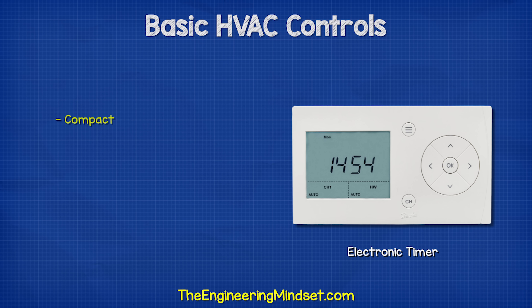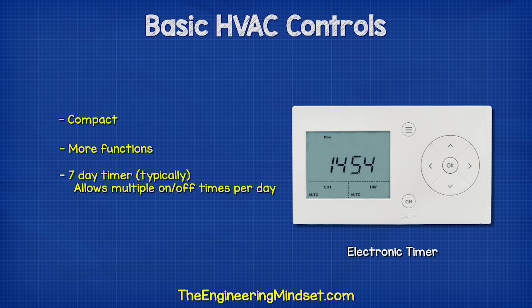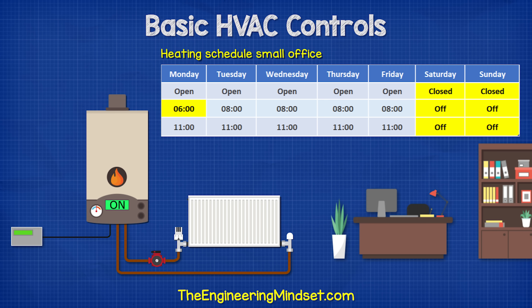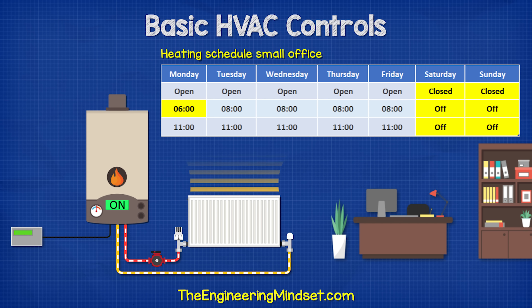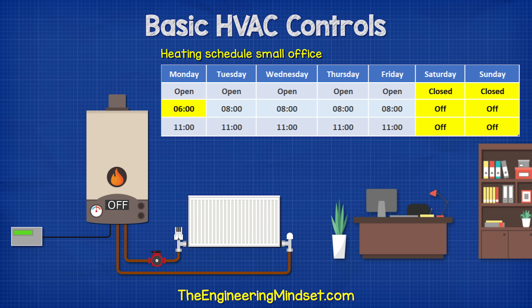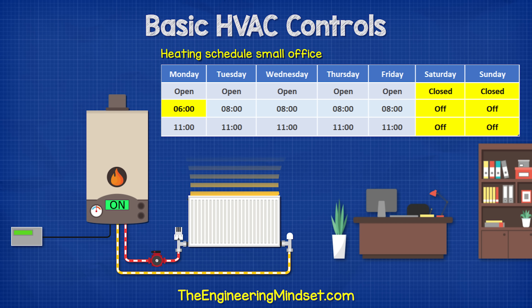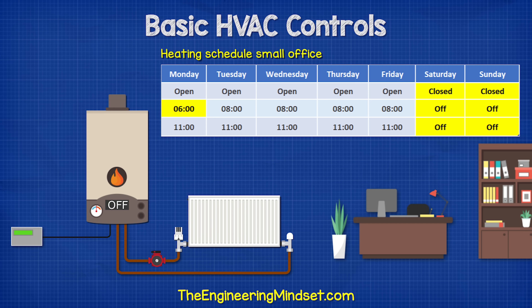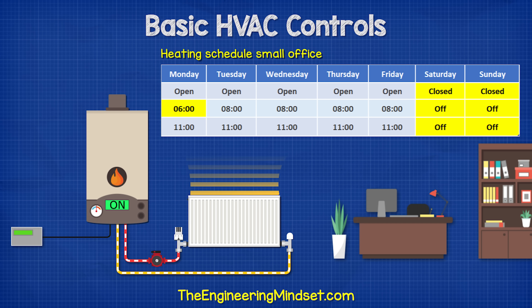Electronic controllers are compact and much easier to use. They have far more functions, but usually at least a seven-day time schedule with multiple on-off times per day. This is useful, for example, in a small office which is closed on weekends. So during the winter, the heating is scheduled to turn off on weekends, and then it starts slightly earlier on a Monday morning because it will take longer to warm the building up.